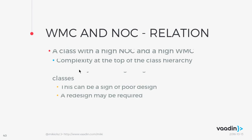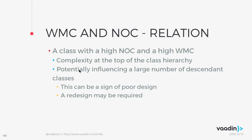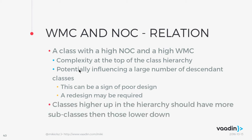The relationship between metrics enriches the story. If both WMC and NOC are high — meaning the class is rich in functionality and has many subclasses — the complexity at the top class is very large. Whatever you change in the higher class will have a ripple effect on the classes below. This can be a sign of poor design, and some refactoring or redesign may be required. Classes higher up in the hierarchy should have more subclasses than those lower down.